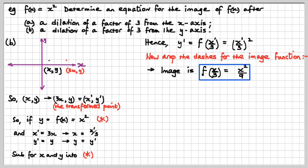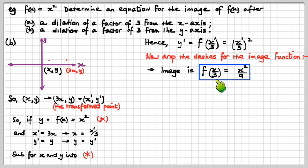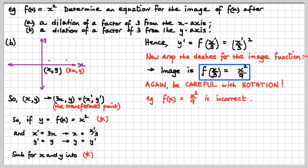The image is f(x/3) = x²/9. As before, do not write f(x) = x²/9, because f(x) is the original function x². Many students are slack with their notation and suffer for it in exams. y = x²/9 is correct — you can write that. Be very careful with your notation.